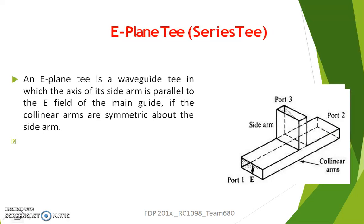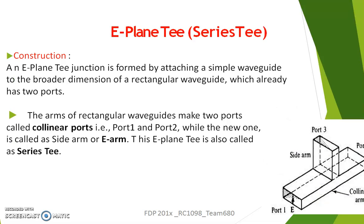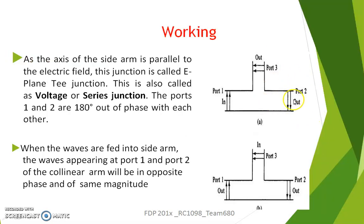What is an E-plane T? It is a junction in which the axis of the side arm is parallel to the electric field of the main waveguide, whereas the collinear arms are symmetric about the side arm. It is formed by attaching a simple waveguide to the broader dimension of the rectangular waveguide, which already has two ports — port 1 and port 2. The arms of the rectangular waveguide, port 1 and port 2, are called collinear ports, while the side arm is called the E-arm. This T is also called a series T, or a voltage junction T.